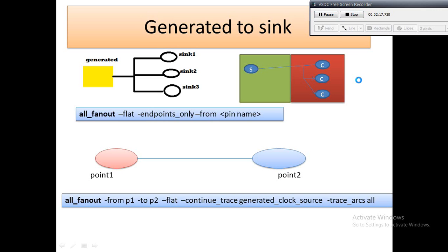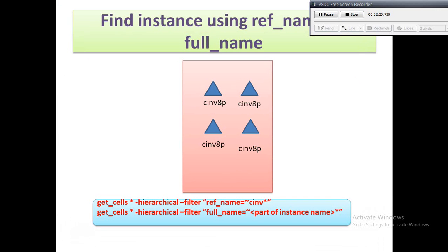Suppose in your design you want to know all the instance names with C inverter 8p. As you know, in a chip there will be several kinds of standard cells - some buffers, some inverters, some VA level shifters, clock gating cells, correct? So suppose you want to know all the instance names with the C inverter 8p drive strength, the first command will help you to find this.